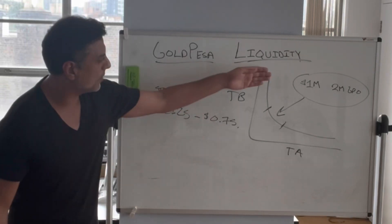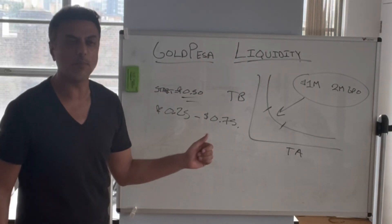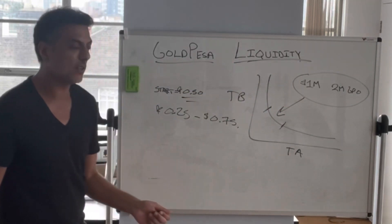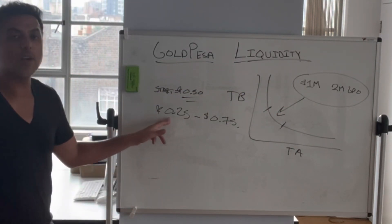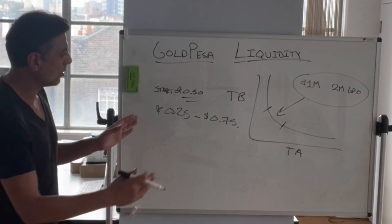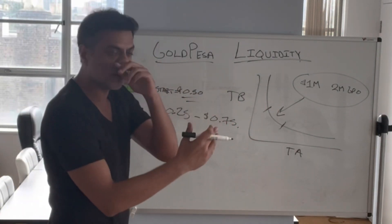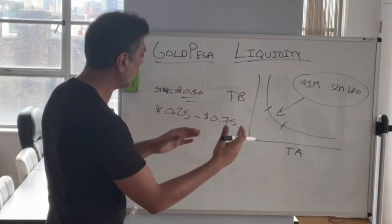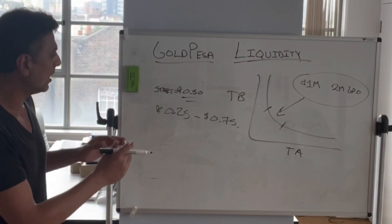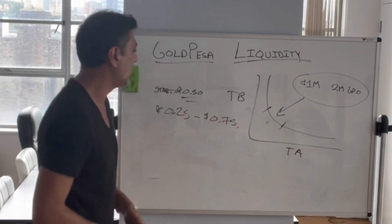And if you were to sell all the GPOs in the liquidity pool and take up all the 1 million US dollars, your price would go to $0.25. So we have concentrated the same amount of dollars and GPO in a range, which gives us a lot more liquidity if the price is within that range.